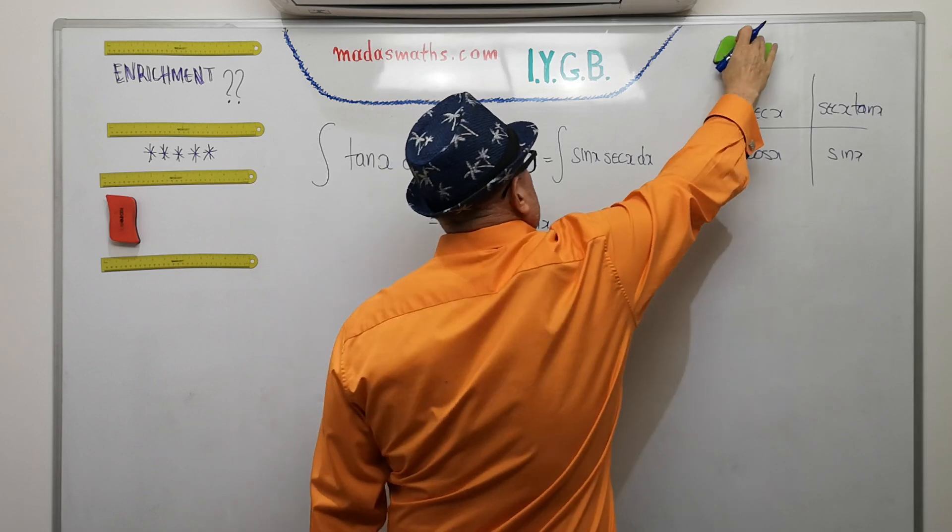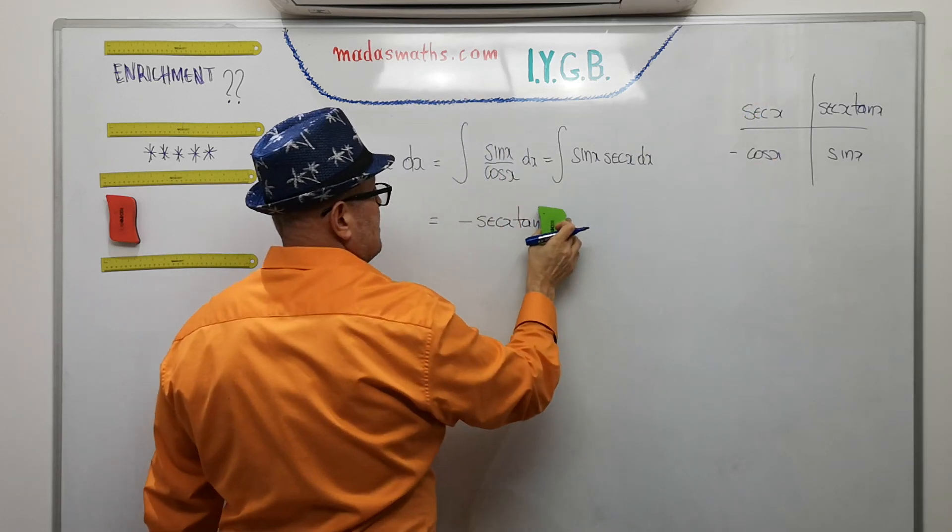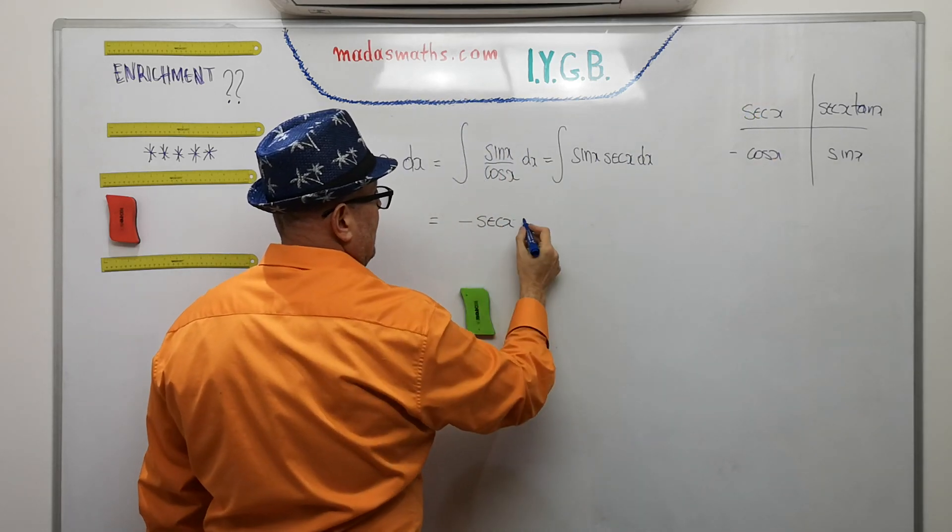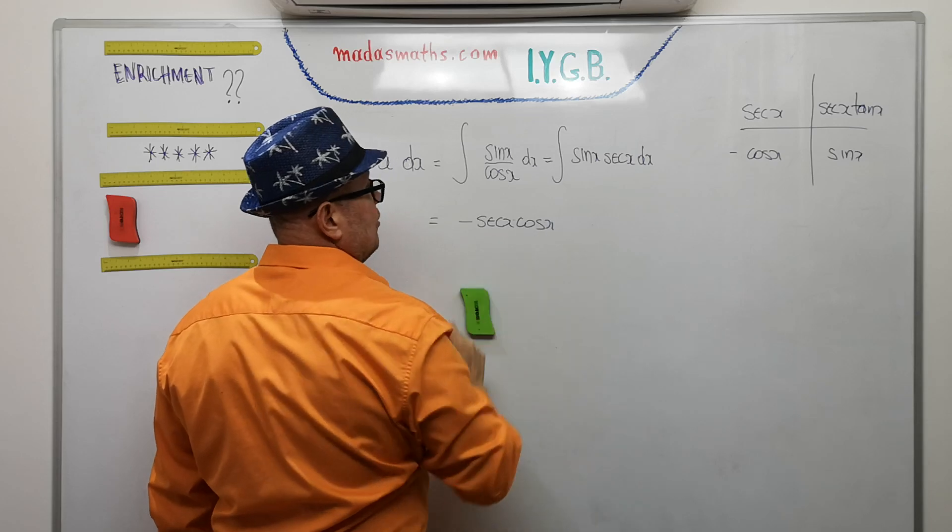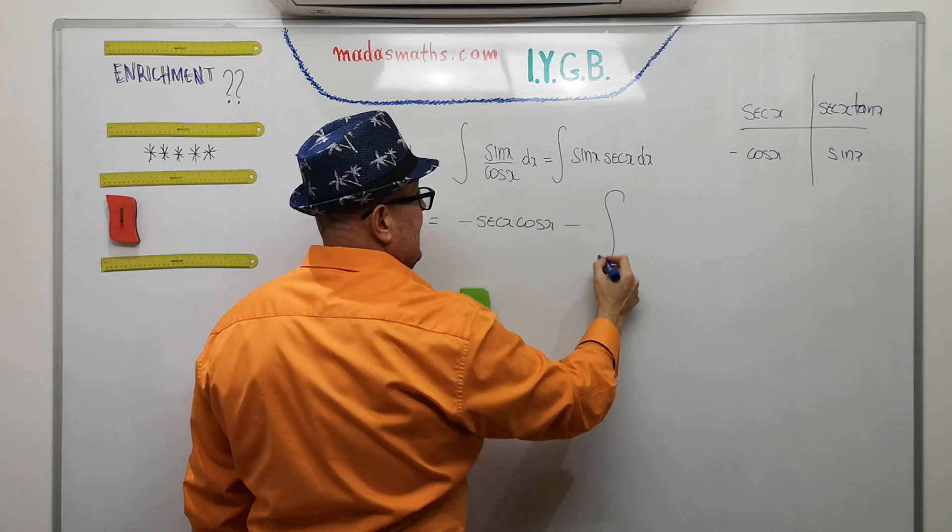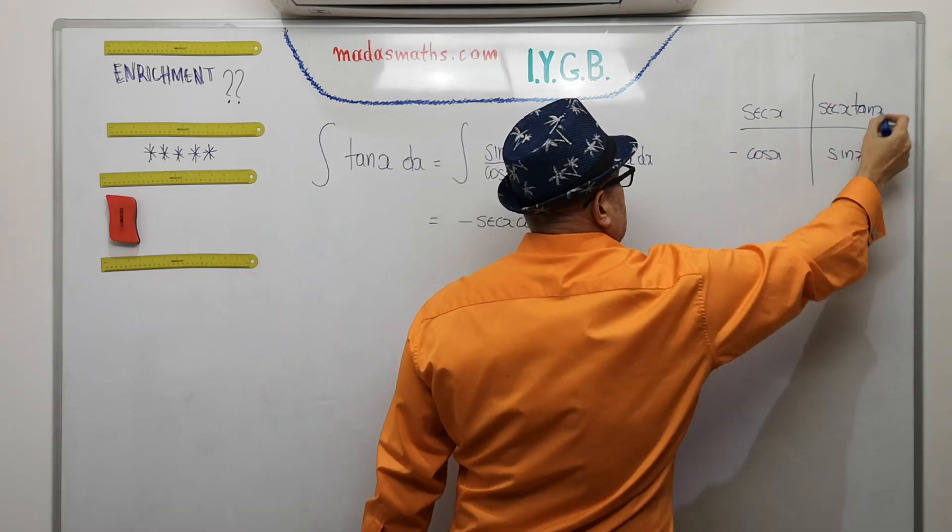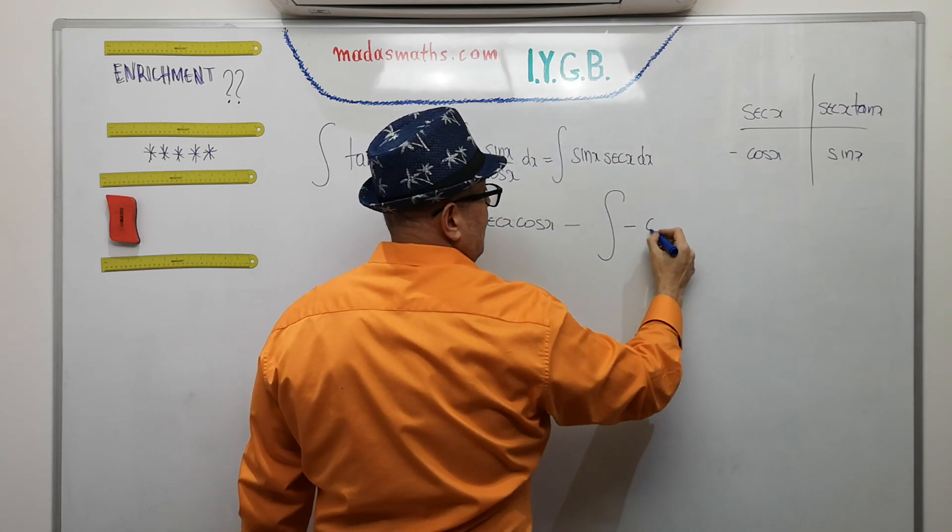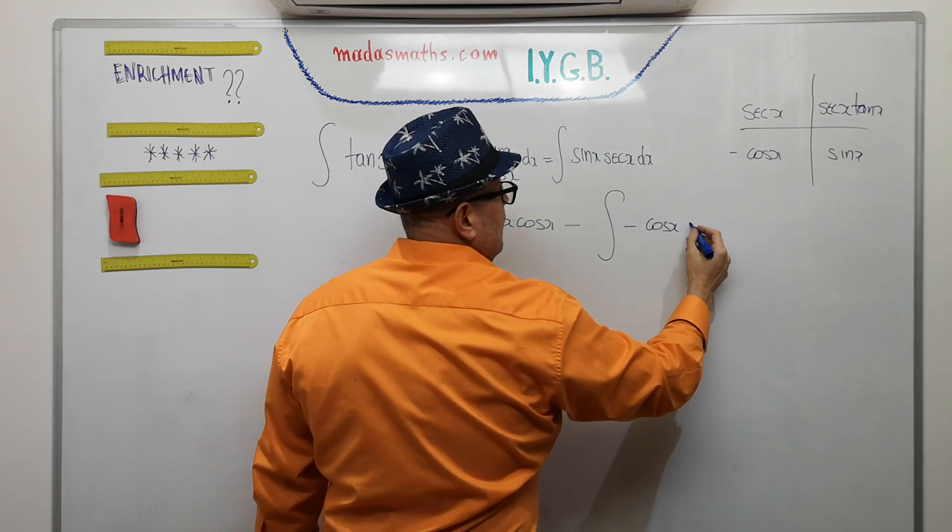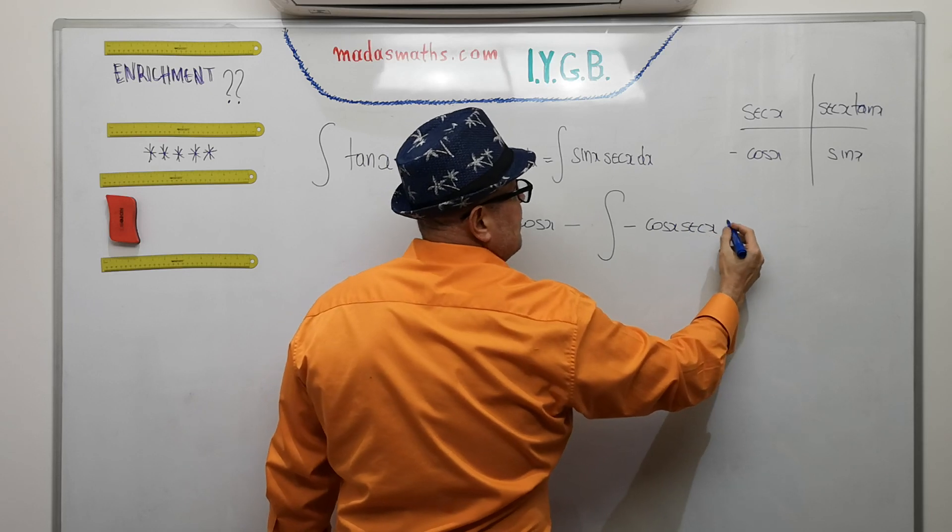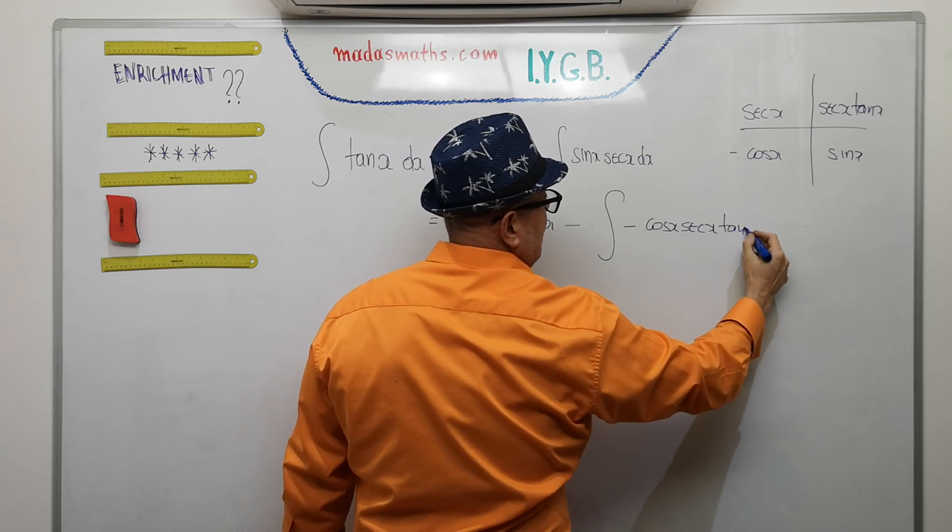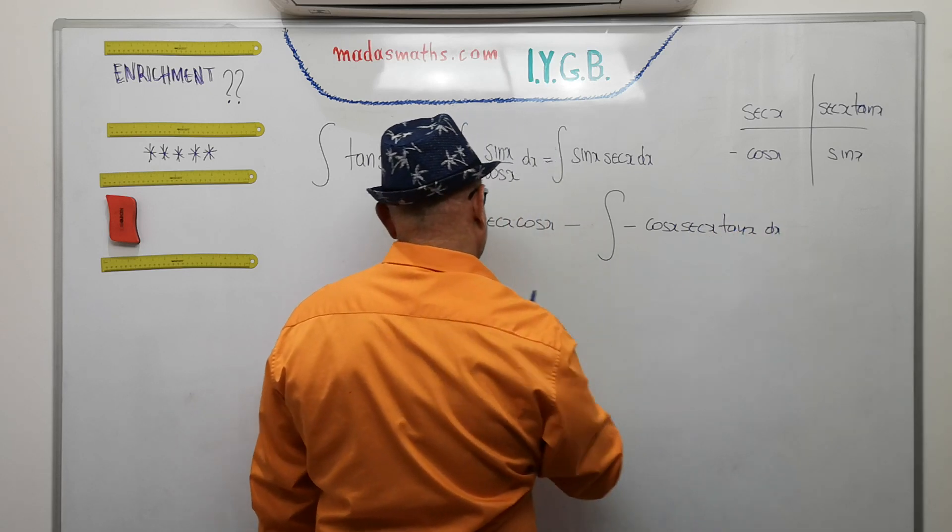Oops, beg your pardon, made a mistake there. Sec x cos x. I'm going to take this particular diagonal, and that's going to be minus cos x sec x tan x dx.